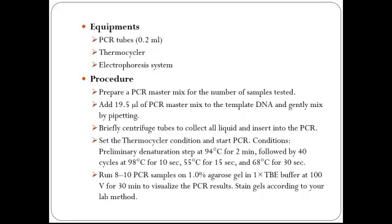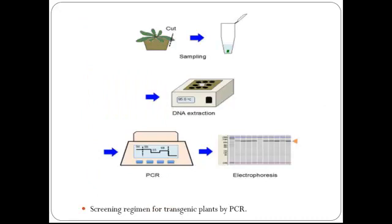Run 8 to 10 PCR samples on 1% agarose gel in 1x TBE buffer at 100 volts for 30 minutes to visualize the PCR result. Stain gels according to your lab method — staining requirements may vary according to materials available in the lab. Once the PCR procedure is finished, perform electrophoresis to see the desired band on the agarose gel.